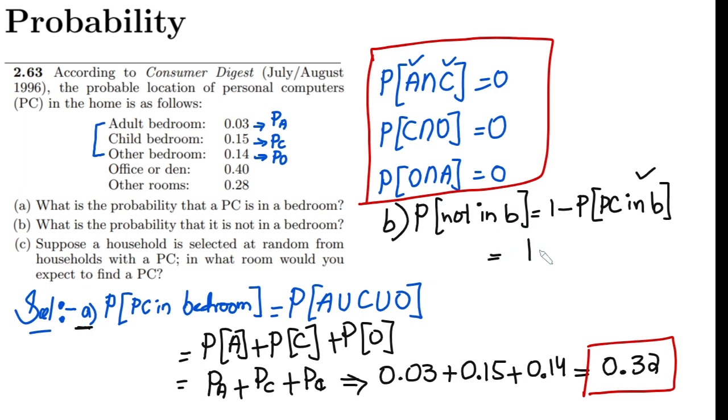Now do I know the value of it? Yes, I have previously found it out in part (a). So let me put it here and I will get here 1 minus 0.32, and ultimately I will get 0.68. That is basically the solution of part (b).